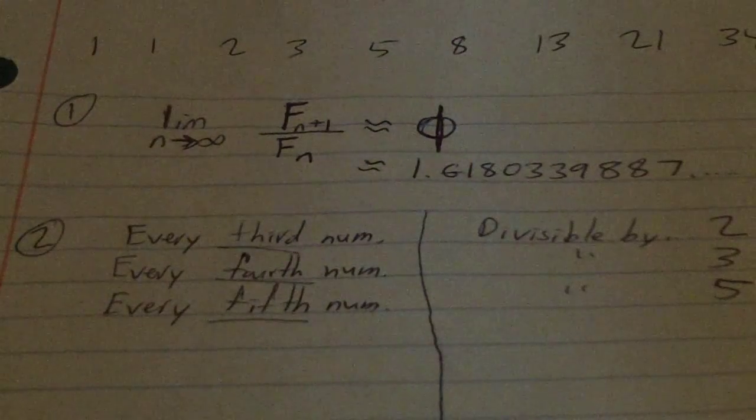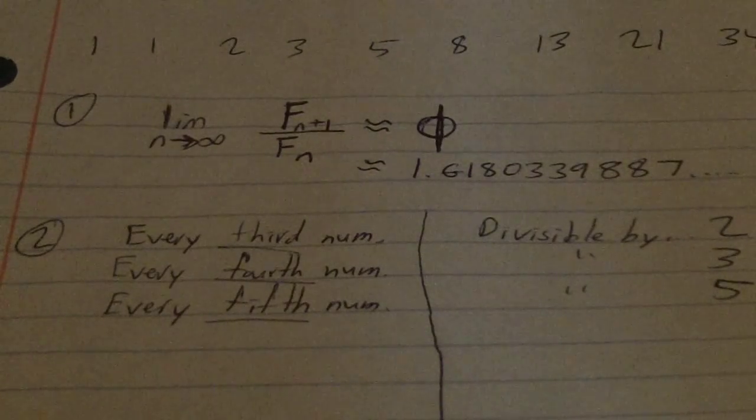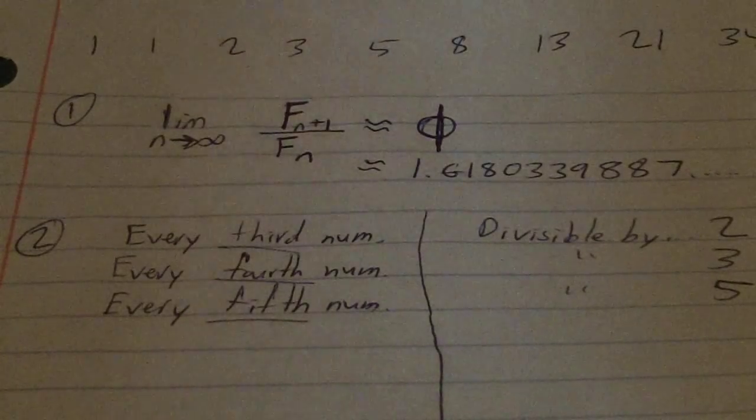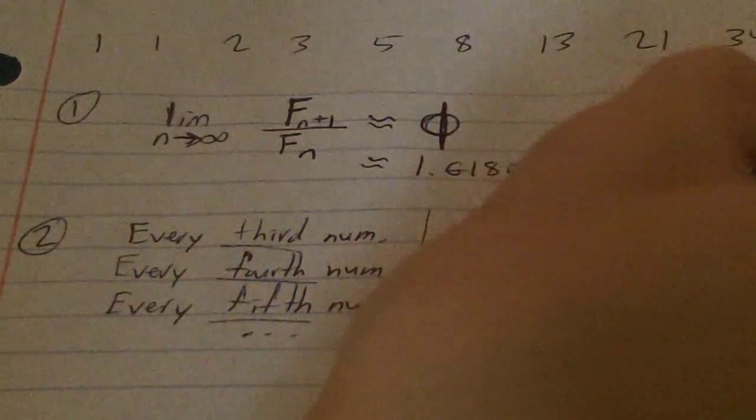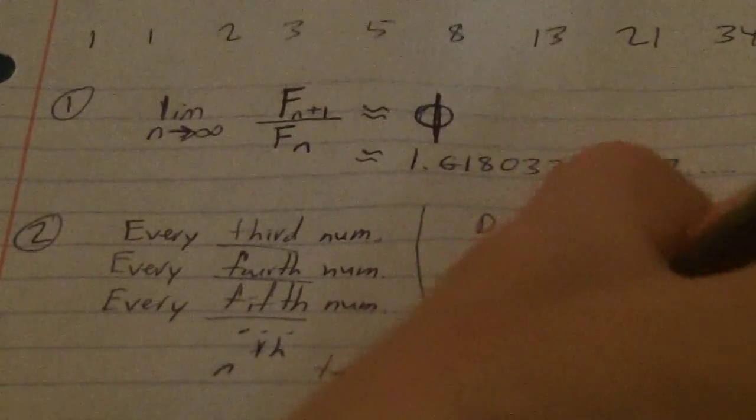The second interesting fact is that every third number is divisible by 2, every fourth number is divisible by 3, every fifth number is divisible by 5, and so on. This continues to infinity, where every nth term is divisible by f sub n.